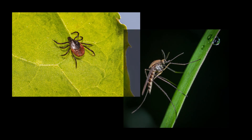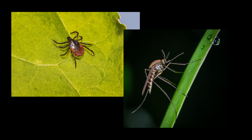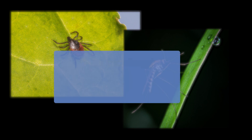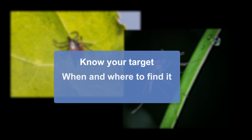The first component of an IVM program is understanding the vector's biology and behavior. Knowing what vector species you are targeting, when and where you can find them, and how they behave can help you develop effective management programs.